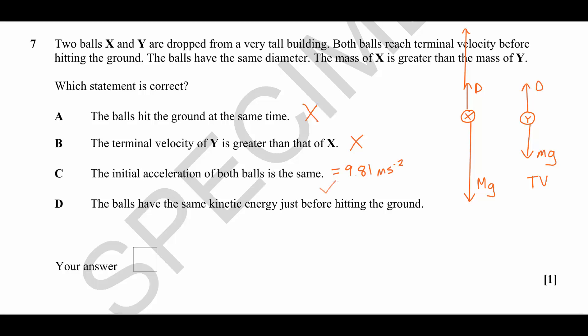Just for completeness, let's have a look at part D: the balls have the same kinetic energy before hitting the ground. Now that's nonsense. The balls have different masses. Kinetic energy is half MV squared. The different masses would certainly give them a different kinetic energy, but also they have different velocities.